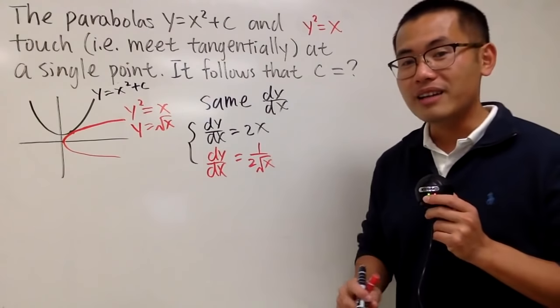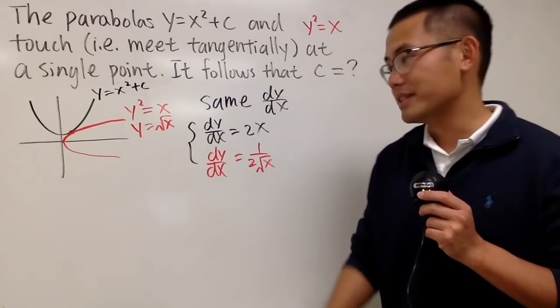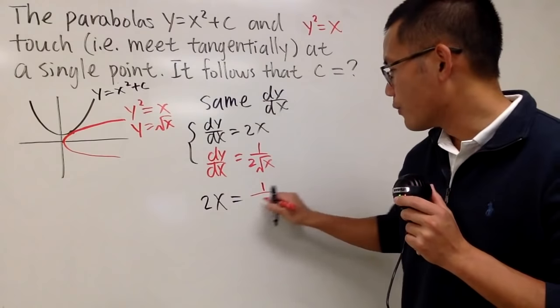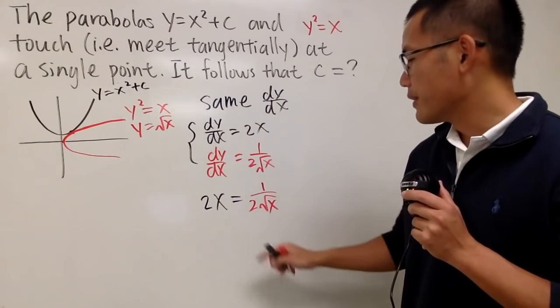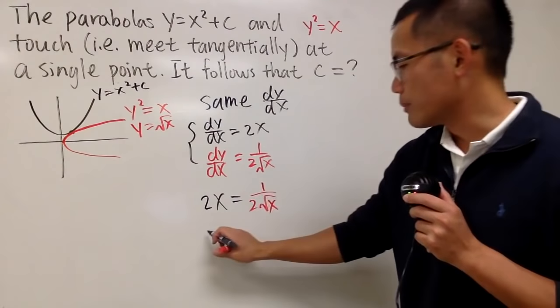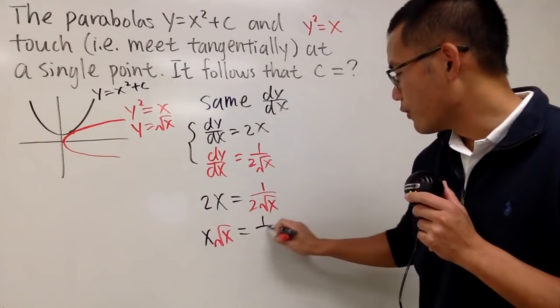Now, set them equal to each other. And that will give us the x coordinate that have the same derivative. Very good. So here, I will just put down 2x equals 1 over 2 square root of x. And then I will just divide the 2 on both sides and multiply the square roots on both sides. So we have x square root of x, and that's equal to 1 over 4.